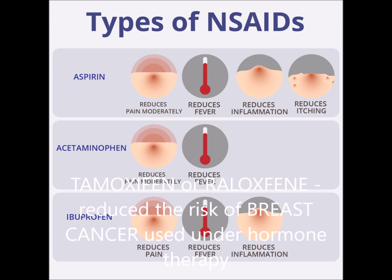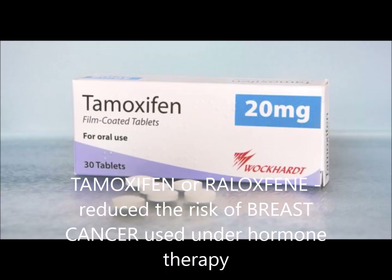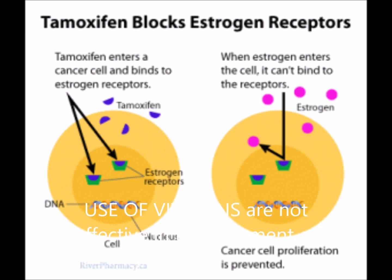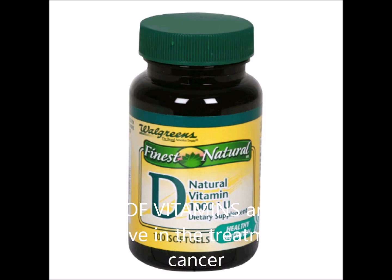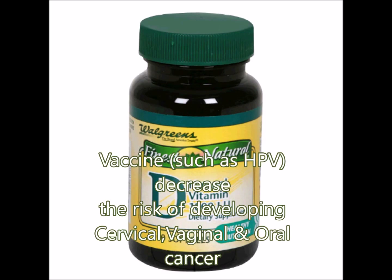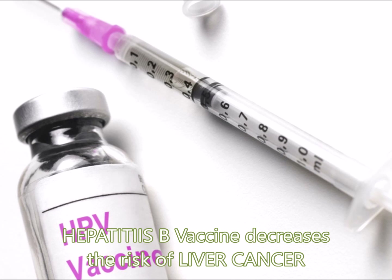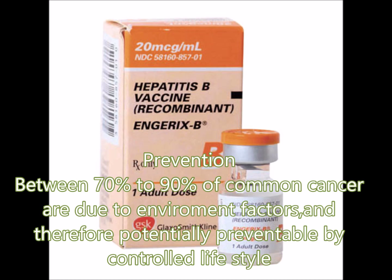In hormone therapy, tamoxifen or raloxifene reduce the risk of breast cancer. Tamoxifen works by blocking estrogen receptors. Use of vitamins is not effective in preventing cancer, but it has been seen that people who have cancer often have vitamin D deficiency. Vaccines such as HPV decrease the risk of developing cervical, vaginal, and oral cancers, while the Hepatitis B vaccine decreases the risk of liver cancer.